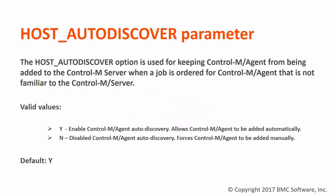The configuration parameter host_auto_discover is set through the Control-M Configuration Manager or CCM. The default value is Y. When set to Y, it enables Control-M agent auto discovery. When set to N, it disables Control-M agent auto discovery and forces the Control-M agent to be added manually.